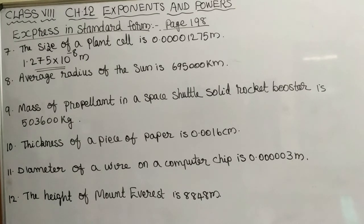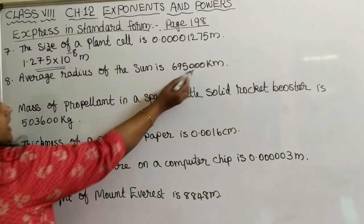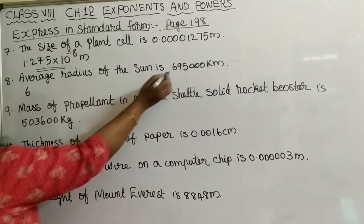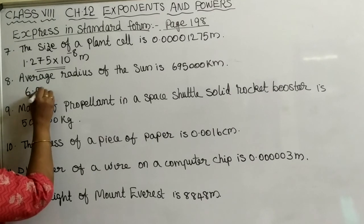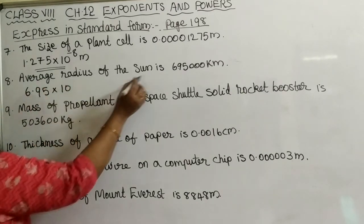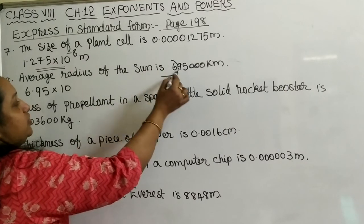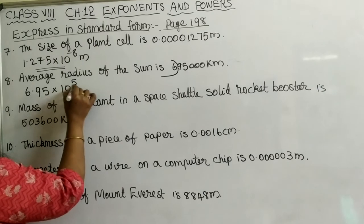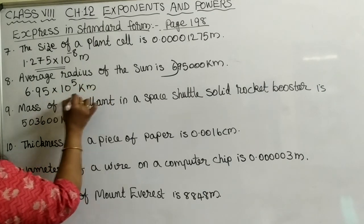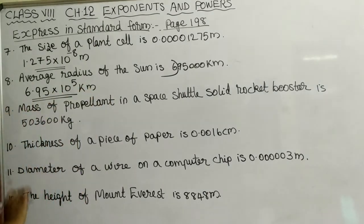The next question: the average radius of the Sun is 695,000 kilometers. It is a whole number, so after the first digit we put the decimal point: 6.95 into 10 raised to the power. Counting the digits after the first digit: 1, 2, 3, 4, 5 — there are 5 digits. So we write 10 raised to 5 kilometers. The standard form is 6.95 into 10 raised to 5 kilometers.